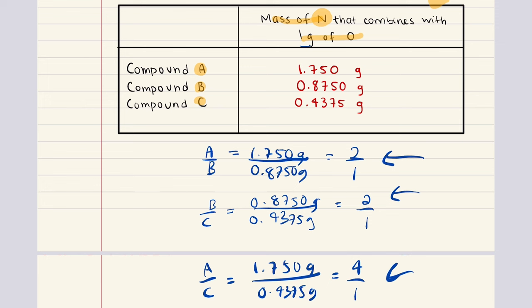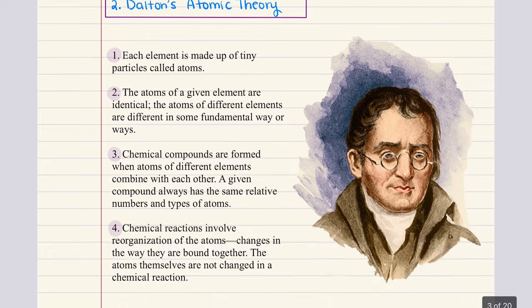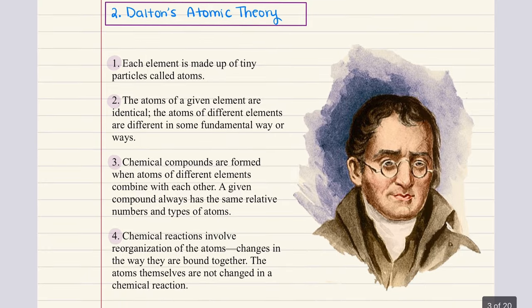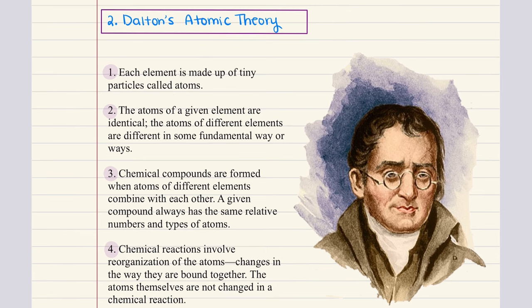To summarize: the law of multiple proportions is a fundamental principle stating that when two elements combine to form more than one compound, the masses of one element that combine with a fixed mass of the other are in a ratio of small whole numbers. With that, we move into Objective 2, Dalton's atomic theory. In 1808, Dalton published a system of chemical philosophy presenting his theory of atoms.